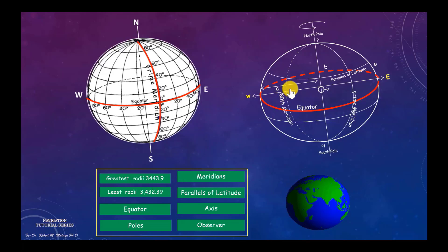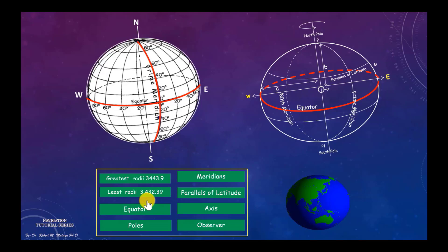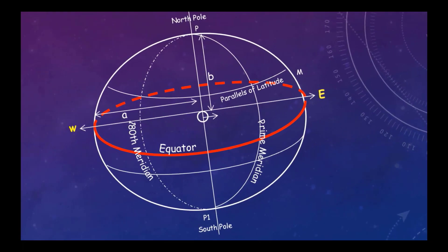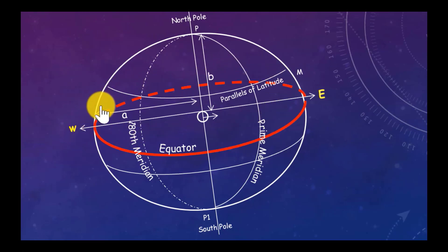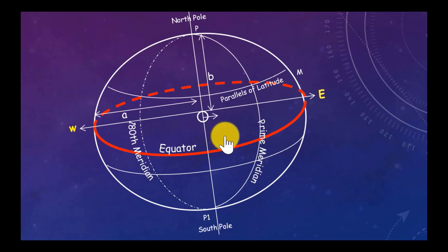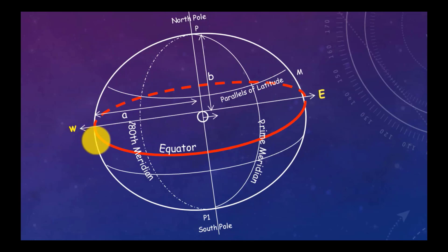The greatest radius (a) is approximately 3,443.9 nautical miles, and the least radius (b) is about 3,432.39 nautical miles. The red circle shown is the equator. As you can see, the equator is always the equator even when the line is on the other side of the sphere — that is why it is regarded as a great circle.